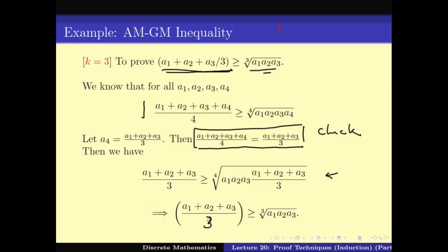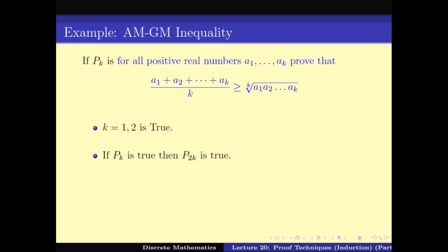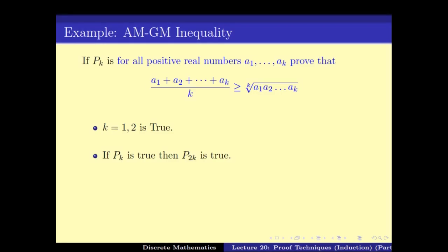Thus we have proved k = 3 using k = 4. I leave it as an exercise that pk implies pk-1: just as we used p4 to prove p3, you can use p8 to prove p7, p7 to prove p6, p6 to prove p5, and so on. So now we have three rules: k = 1 and k = 2 are base cases; pk implies p2k; and pk implies pk-1.